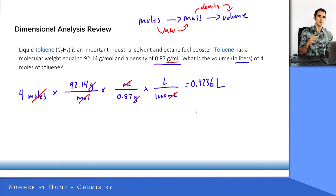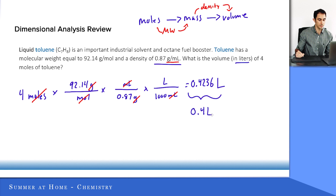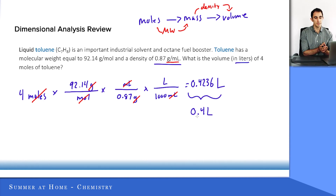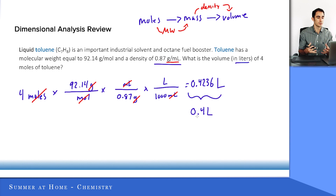I'm not too concerned about sig figs on this particular question. If we wanted to put this into one significant figure because we're dealing with 4 moles, it would simply be 0.4 liters. But what I'm focused on right now is seeing how these units cancel out and how to create a path from one unit to another. If you can't come up with that path on your own, it's nice to rely on the cancellation of units to get to that final destination.